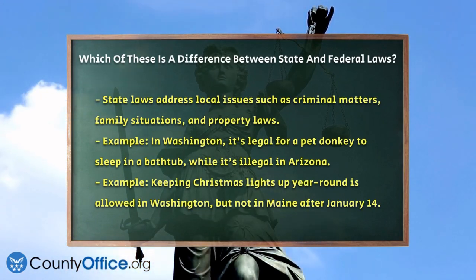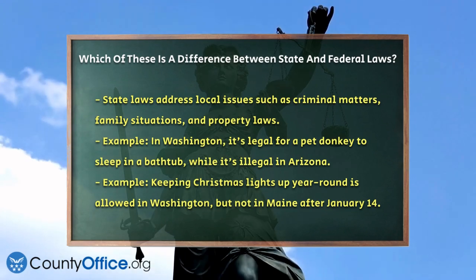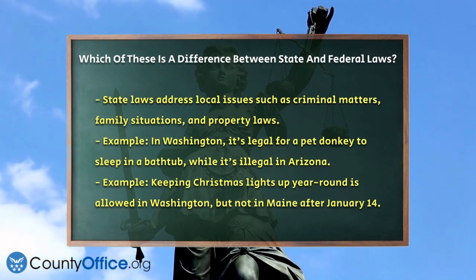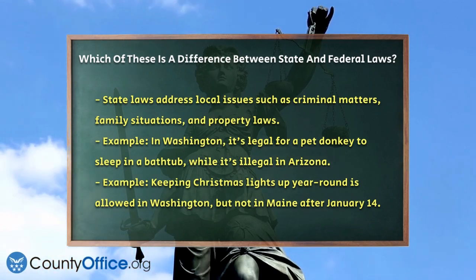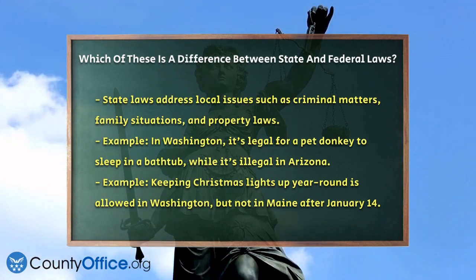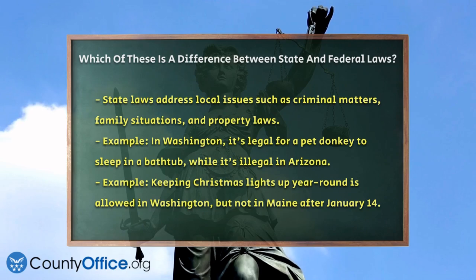Here's a fun example to illustrate this difference. In Washington state, it's perfectly fine to let your pet donkey sleep in a bathtub, but in Arizona, it's illegal to do so. In Washington, you can keep your Christmas lights up all year round, while in Maine, it's illegal to keep them up after January 14th.